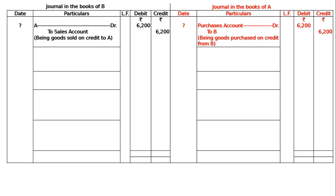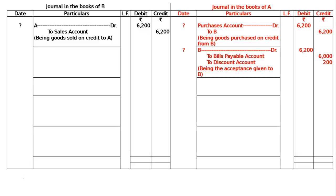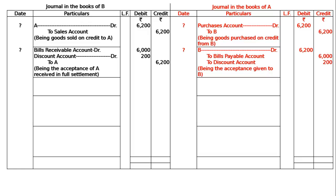For signing of the acceptance in the books of A: B debited Rs. 6200 to bills payable account, Rs. 6200 in the credit column, being the acceptance given to B. In the books of B: bills receivable account debited Rs. 6000, B is receiving the acceptance of A, to A — being the acceptance of A received in full settlement, that is discount Rs. 200.